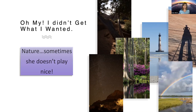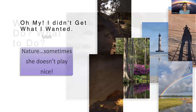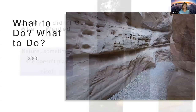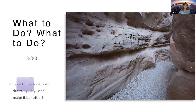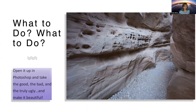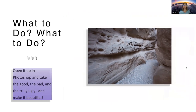Sometimes I get the 'I'm about to get rained on but I got a really cool rainbow out of it' kind of light. We don't always get what we want. How do we take the mundane and make it spectacular? How do we deal with dull light, harsh light, contrasty light? We are going to open it up in Photoshop and take the good, bad, and the truly ugly and try to make it beautiful.